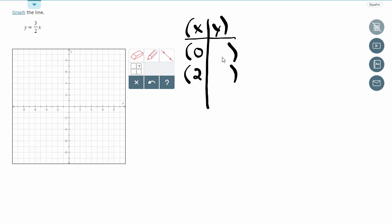And now all I have to do is do the workout. So y equals 3 halves x. And I'm going to substitute 0 in the first example. And I know that any number times 0 is going to be equal to 0. So the output for that one is 0.